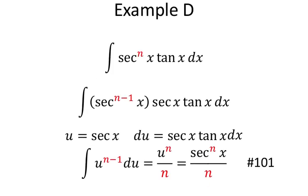The cool thing with that particular example is that it works not just for 3 — it works for any number n. Replacing all the 3's with n's and all the 2's with n minus 1's, you end up with integral number 101 from the back of the book. So just by playing around with these rules, you can actually end up deriving integrals found in integral tables. It works for any value of n.